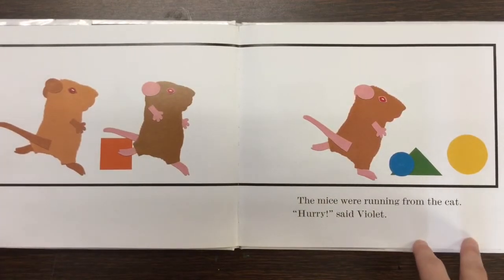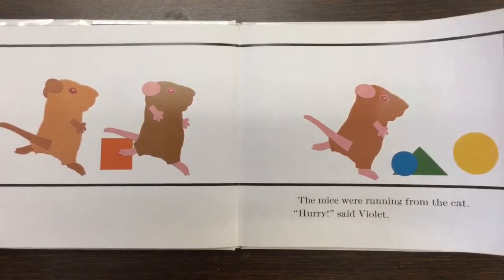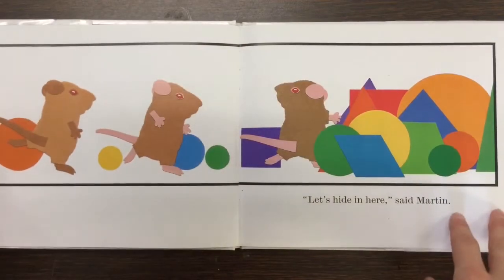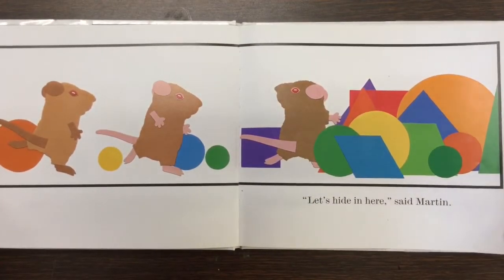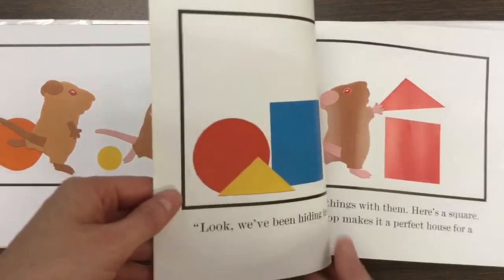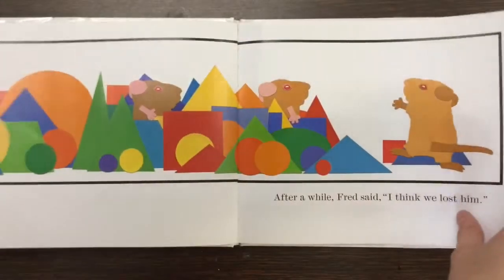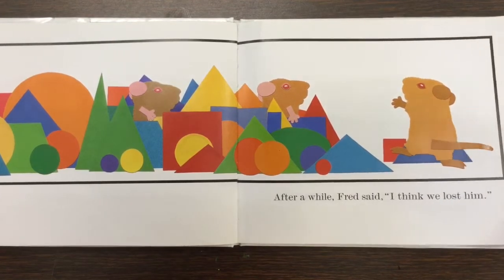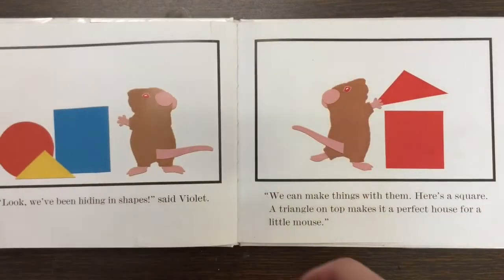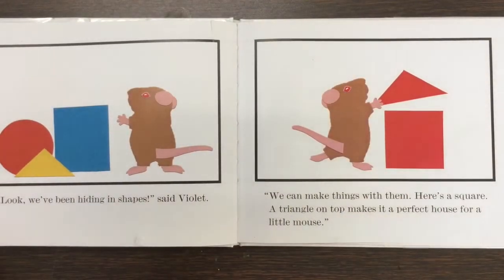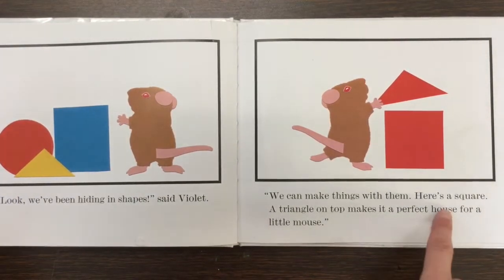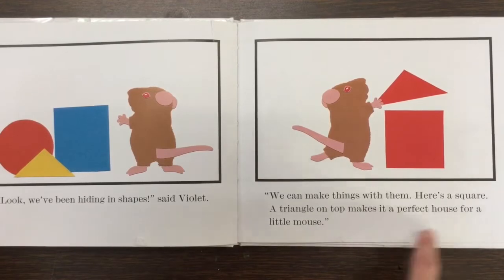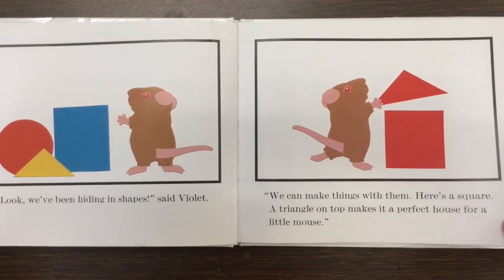The mice were running from the cat. Hurry, said Violet. Let's hide in here, said Martin. After a while Fred said, whew, I think we lost him. Look, we've been hiding in shapes, said Violet. We can make things with them. Here's a square. A triangle on top makes it a perfect house for a little mouse.